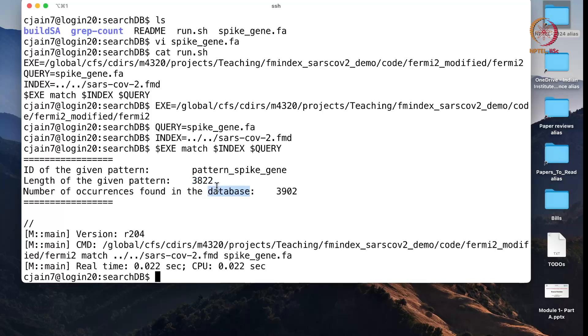In other words, 3902 genome sequences have the exact same gene sequence that I just gave. Now, again I want to remind you that we are working with a very small index here. We are not using the 12 GB file, we are only working with the 33 megabyte file index.